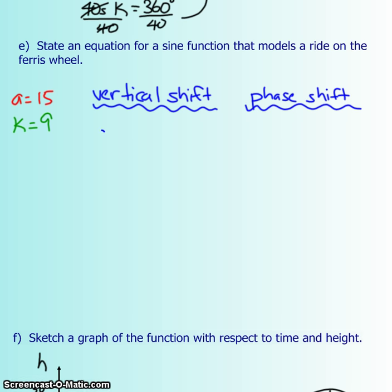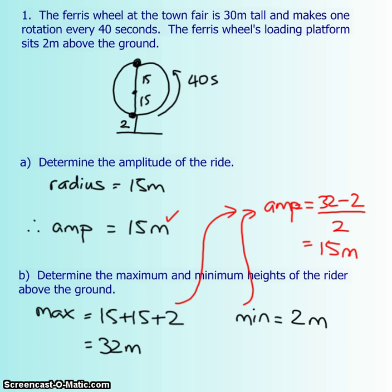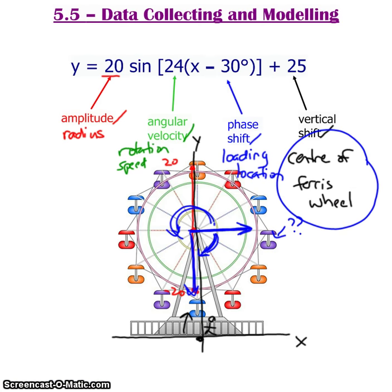Now that letter C represented the vertical shift. And remember that we could always figure that out by taking the max minus the amplitude. So that was 32 minus your amplitude of 15, which is 17. And I want to go back for a second so that you understand what I was talking about. This is from the center of that Ferris wheel all the way down to the ground. That's your 17. So that's what I meant before by the center of the Ferris wheel.